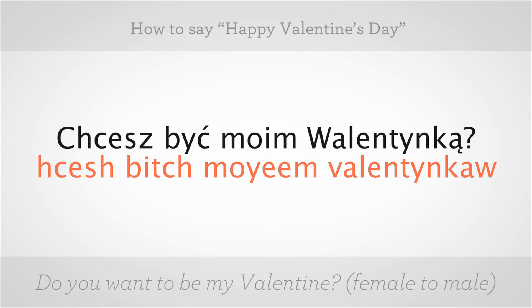Then the C in the second word with an accent is a CH — it sounds like 'bitch.' So, bitch. Moim. Moim. And then Ws in the Polish language sound like Vs, so va-len-tyn-kom. An A with an accent on the bottom turns the A into 'on,' so va-len-tyn-kom. One more time: va-len-tyn-kom. Chcesh bec moim valentinkom? Chcesh bec moim valentinkom? Go ahead, try it. Very good.